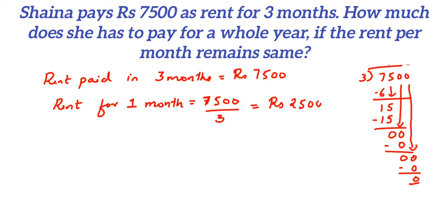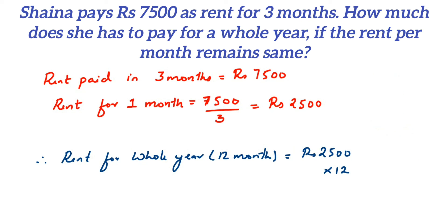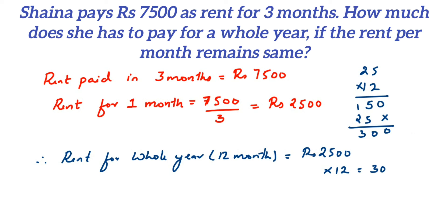Now we have to find out for 12 months. Therefore, rent for the whole year — whole year means 12 months — will be equal to Rs. 2500 multiplied by 12. Multiplying 25 and 12: 2 fives are 10, 2 twos are 4 plus 1 carry gives 5, and 1 into 25 is 25, giving 300. Remember we have two zeros from 2500, so the final answer is 30,000. She is paying Rs. 30,000 as rent for the whole year, that is for 12 months.